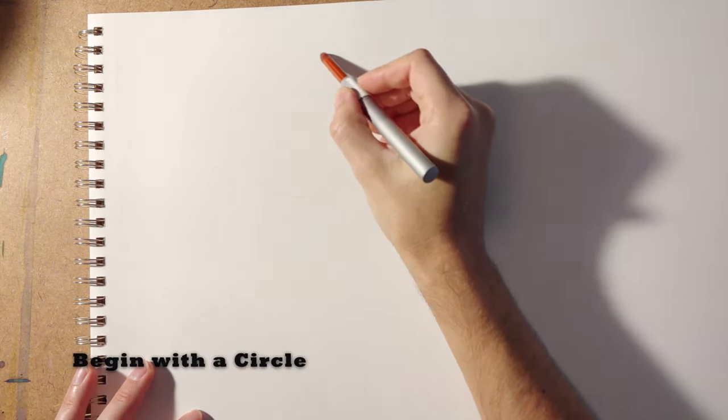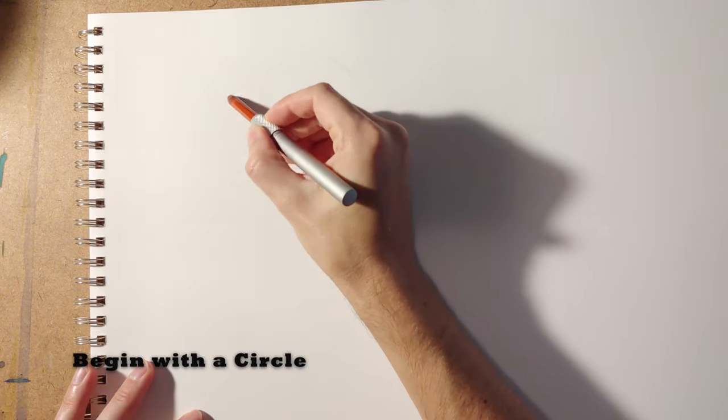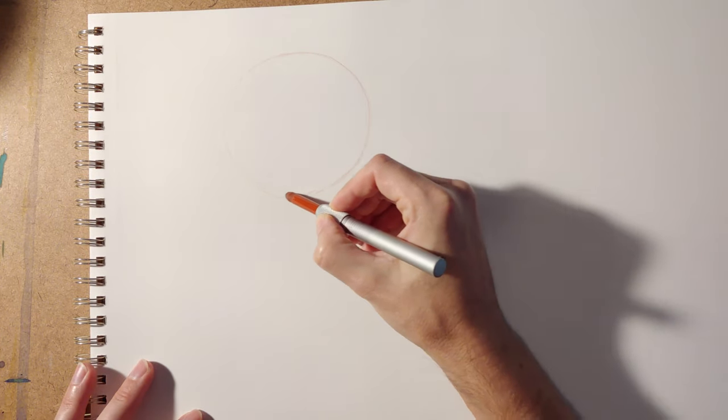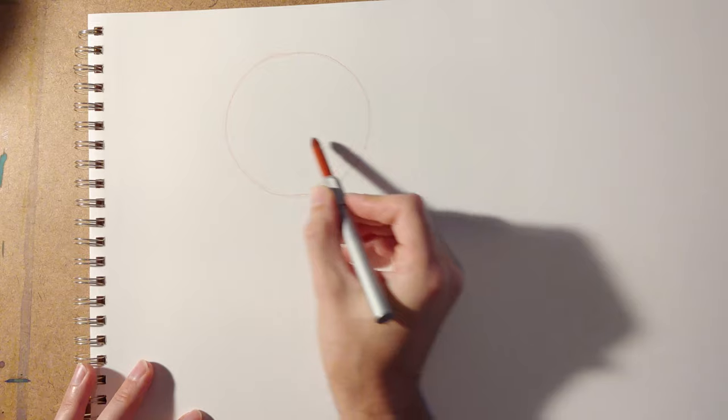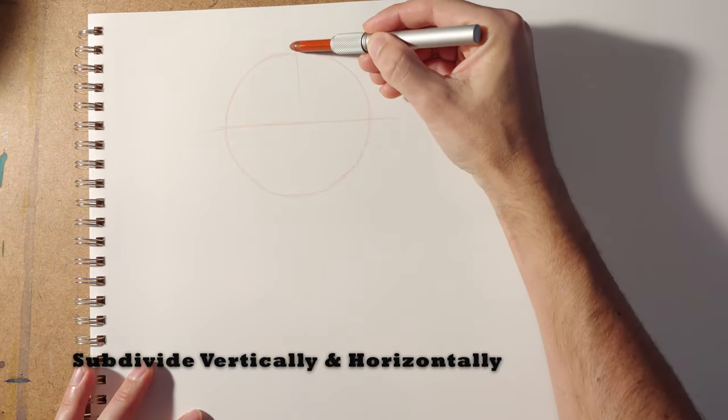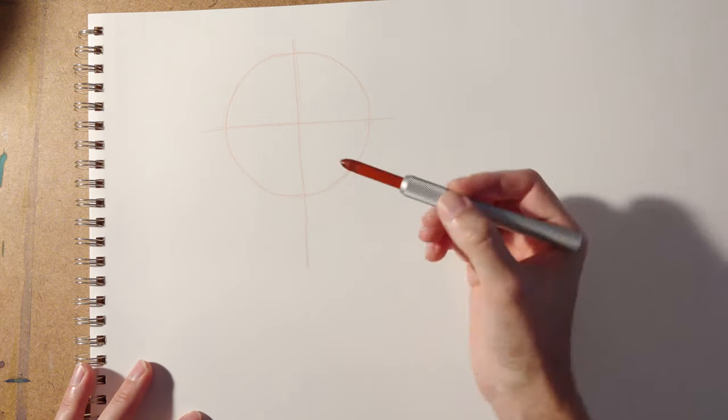This is a really popular way to do basic head proportions, and you'll see it especially among concept design artists, and it works really well. It just starts with a circle, and then you just subdivide it in half, both vertically and horizontally.